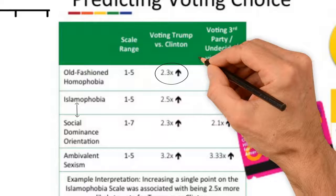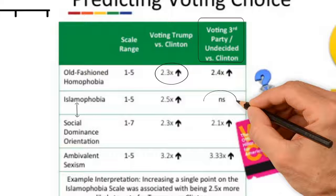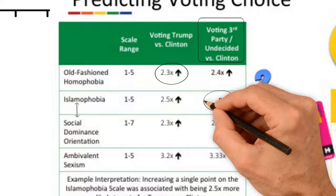Similar patterns were found when predicting third-party or undecided votes, except that Islamophobia was not a significant predictor when comparing third-party or undecided voters to Clinton voters.